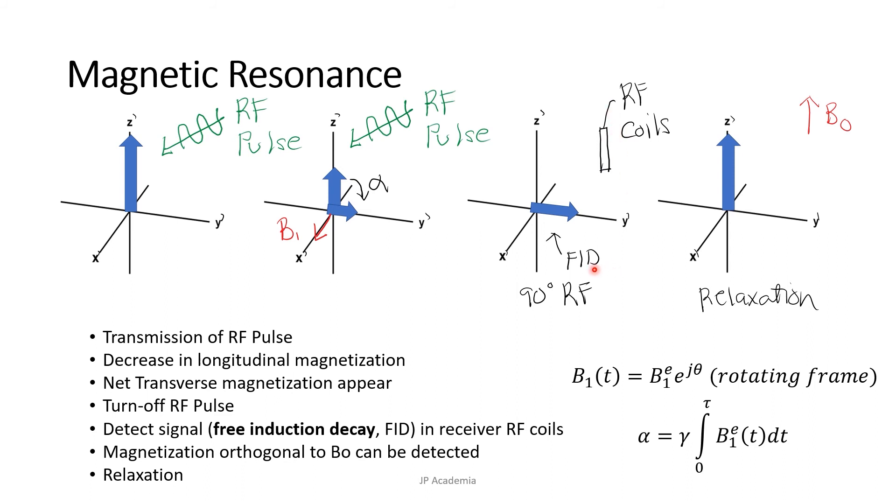Note that this type of RF pulse is called 90 degrees or 90 degree RF since we flip the longitudinal magnetization vector onto the transverse plane. So this alpha here is equal to 90 degrees or this is orthogonal to the external field B0. Last step is relaxation, or this is where the net magnetization returns back to the initial state as shown here.